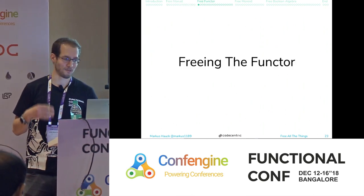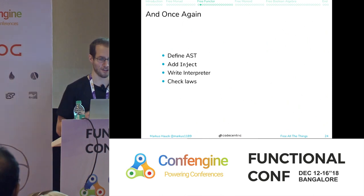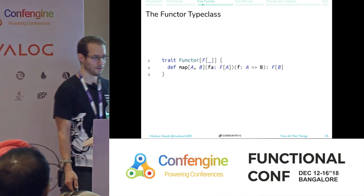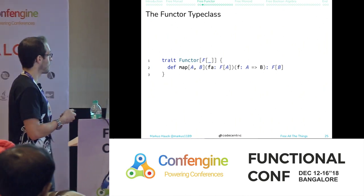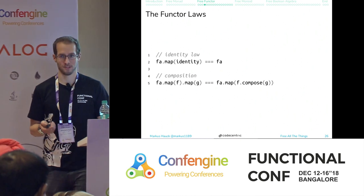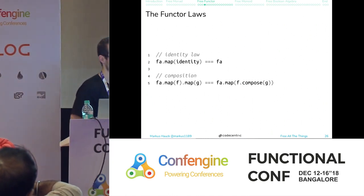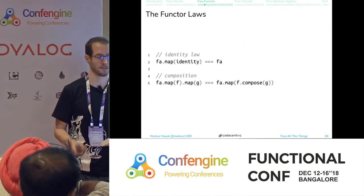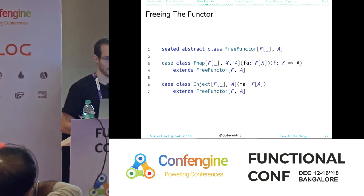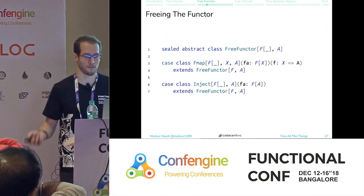For the free functor we follow the same four steps. The functor type class is simpler: just one function called map that takes an F of A and a function from A to B and returns F of B. The laws are: identity — mapping with identity should have no effect — and composition — mapping twice should equal mapping once with the composed function. We create an AST called FreeFunctor with an FMap case from the type class and one additional Inject case.